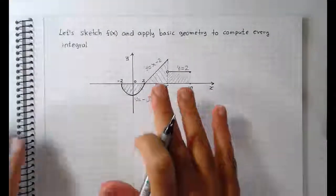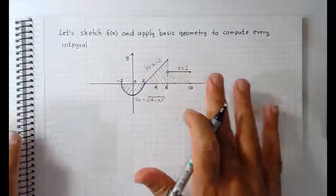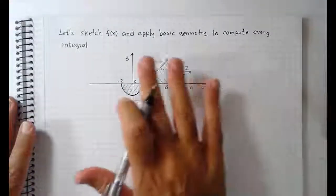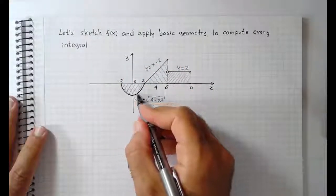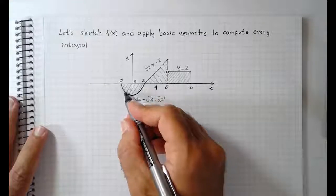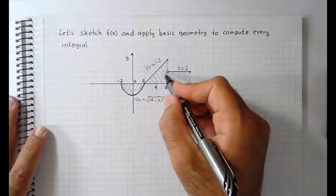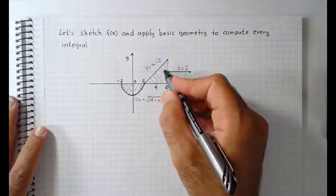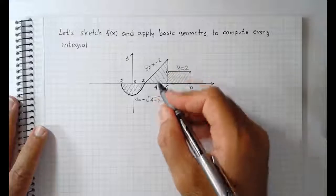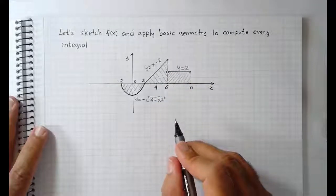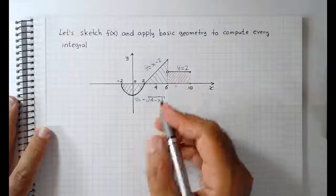Here's a sketch of the function f of x, and we're going to apply basic geometry to compute every integral. Notice this is a semicircle below the x-axis, and this is just a triangle where the top edge is y equals x minus 2. And this is a horizontal line y equals 2.